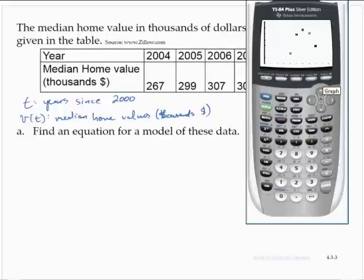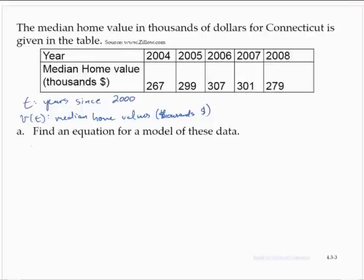And we do see a roughly quadratic look to it. It looks like a parabola, and it looks like the point 6, 307 is the vertex. So I'm going to start by saying that v of t is equal to a times t minus 6 squared plus 307.